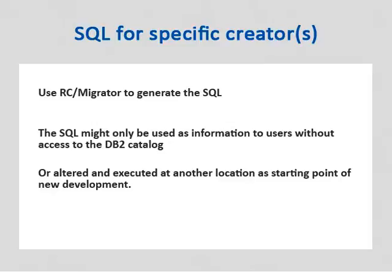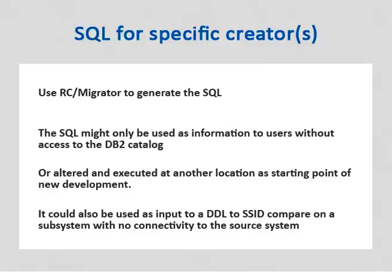It could also be manually altered and executed on another location than its original source by developers, for example as the starting point of new work. In this case, they don't want any utility statements generated. It could also be used as input to a DDL2SSID compare on another subsystem which does not have connectivity to the source subsystem.